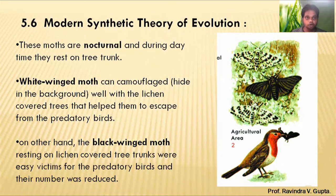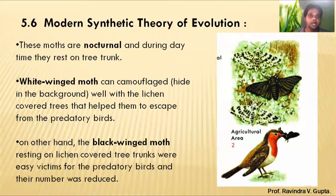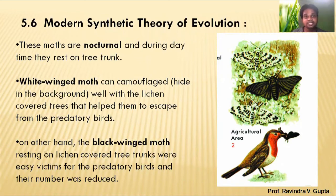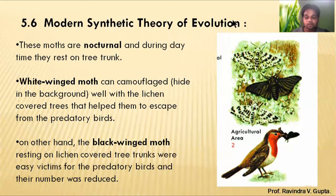Lichen growth is a pollution indicator — lichen grows only where there is no pollution. Before 1845, with no pollution, lichen growth was very high. Because of this lichen growth, white-colored species were not seen by predatory birds as contrasting colors, while the black species remained low in number.